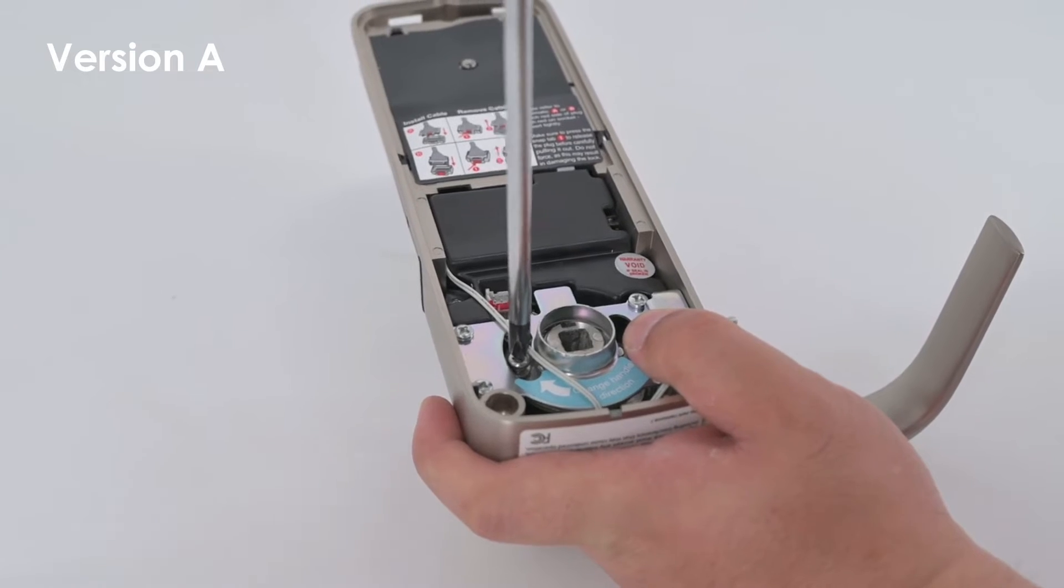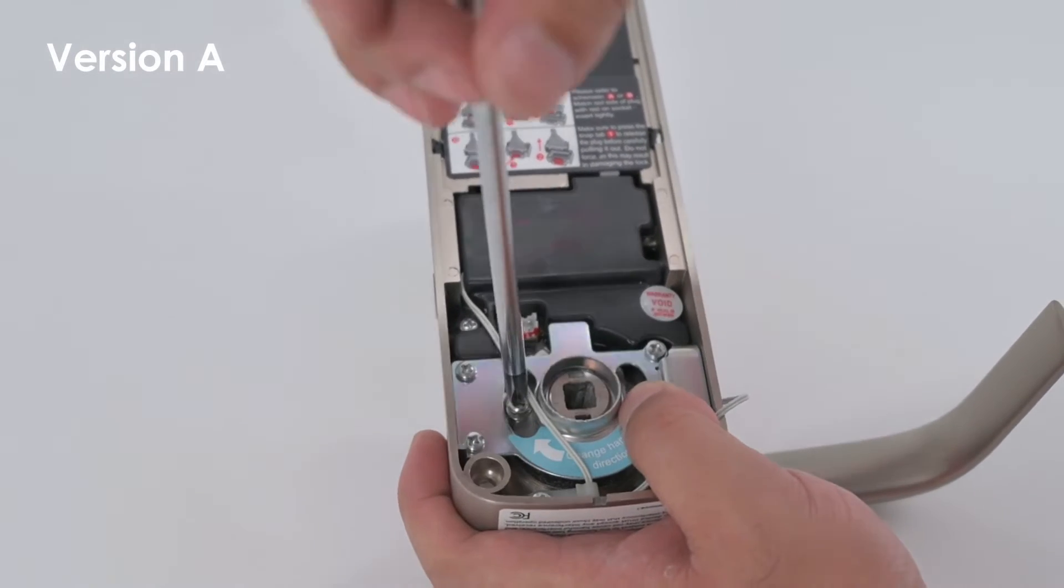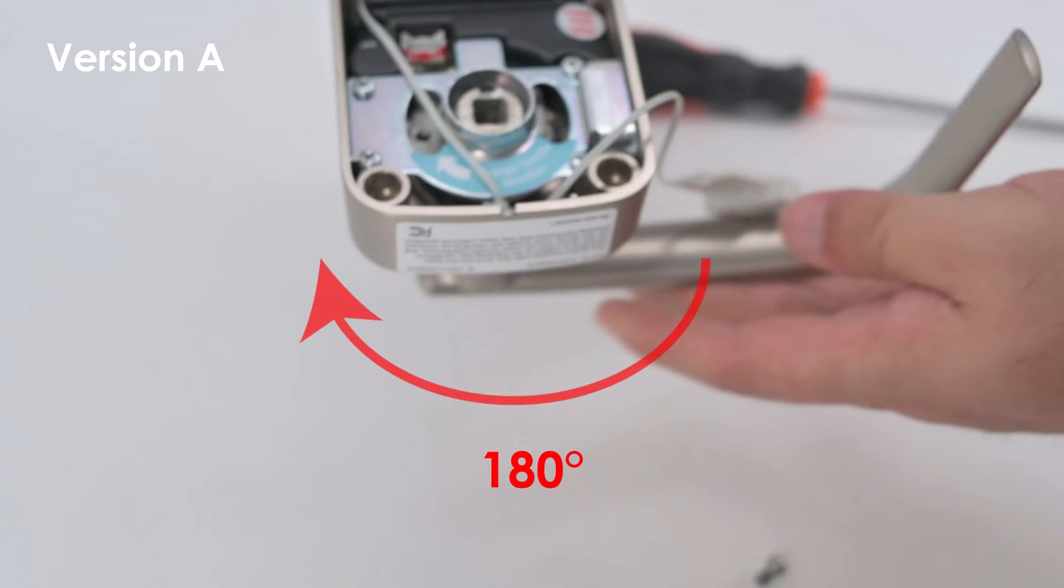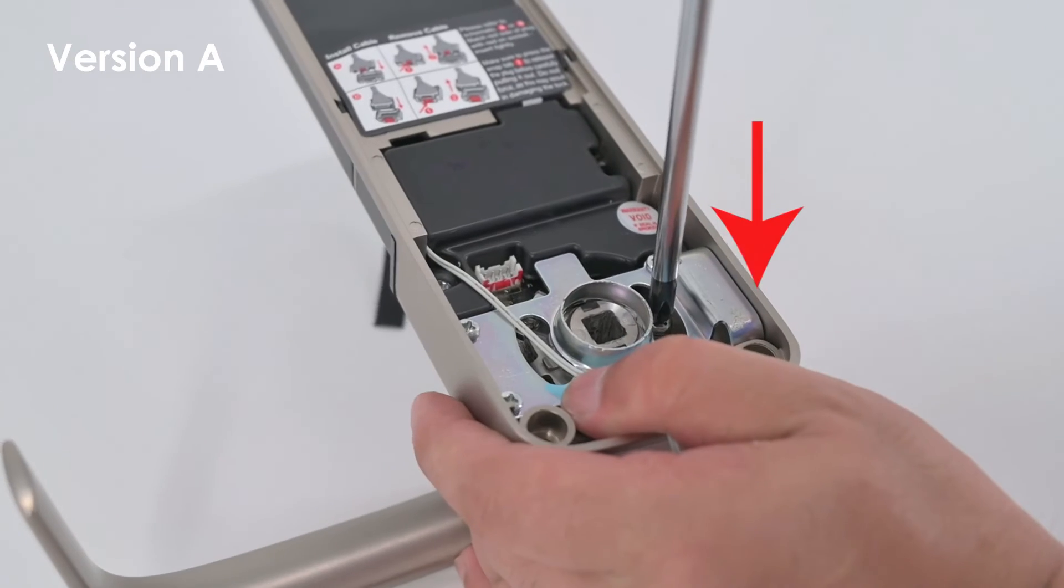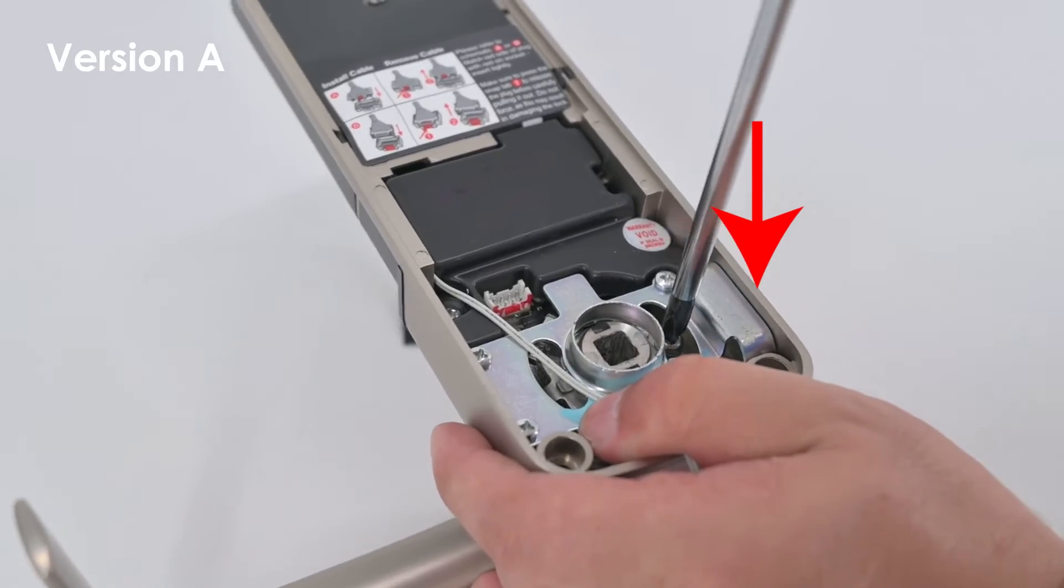Version A: Remove the screw on R. Rotate handle to 180 degrees as shown. Insert the screw on L then tighten using a screwdriver.